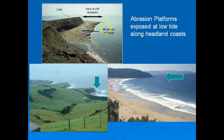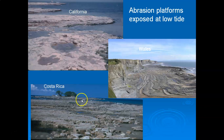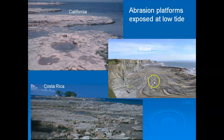Here's a beautiful example of an abrasion platform or wave-cut platform exposed at low tide, and here are pictures from Australia showing at low tide that this headland was once much larger. Here in California you can walk out on the abrasion platform and see tidal pools. Here in Costa Rica is another example, and along the coast of Wales there's a really great example of a very broad abrasion platform.